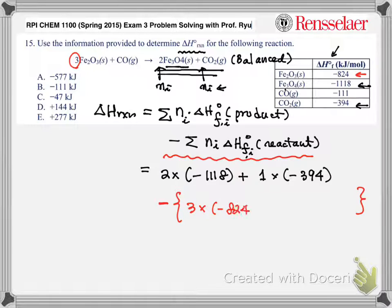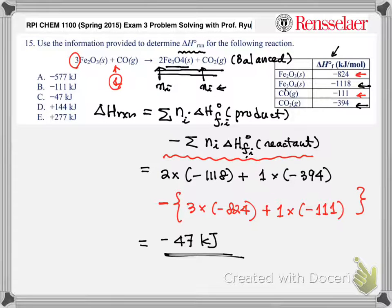Fe2O3, there you are. So minus 824, and then you put them all these numbers together in the calculator and you will get -47 kilojoules. The answer for this is C.